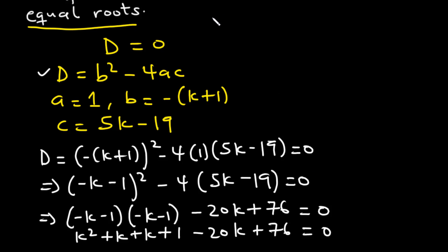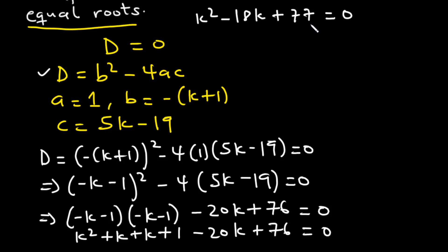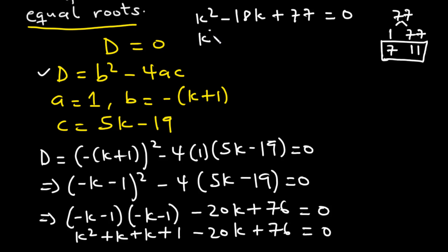Expanding further: negative k times negative k is k squared, negative 1 times negative 1 is 1, so we have k squared minus 2k plus 1 minus 20k plus 76 equals 0. Collecting like terms: k squared minus 18k plus 77 equals 0. The coefficient of k squared is 1 and the constant is 77, so we need factors of 77 that multiply to 77 and add to negative 18. Factors of 77 are 1 and 77, and 7 and 11. We select 7 and 11, giving k squared minus 7k minus 11k plus 77 equals 0.